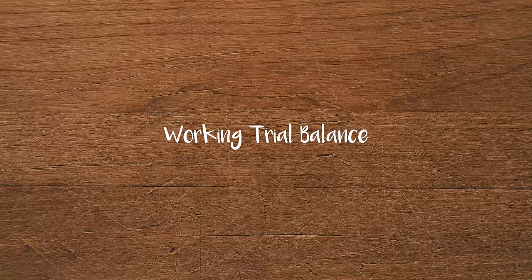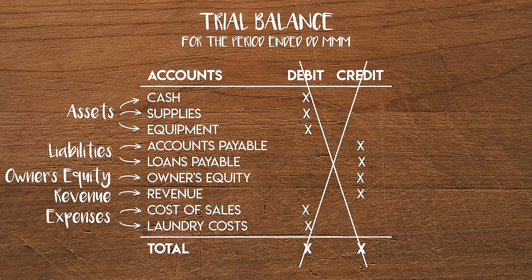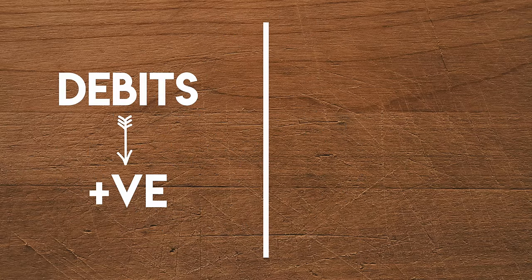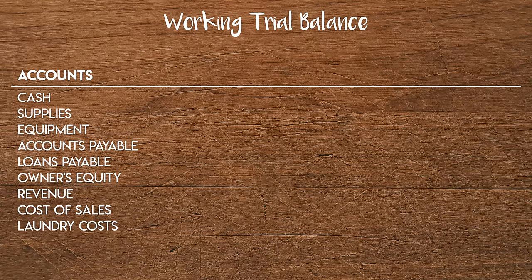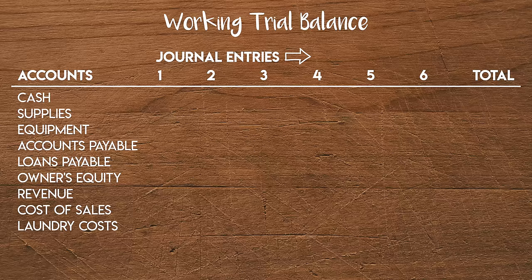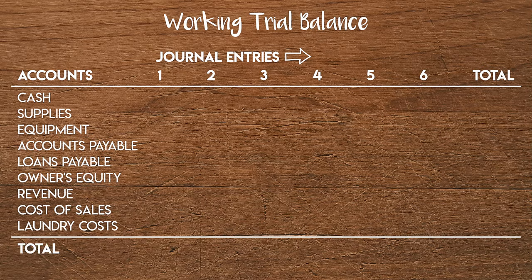Example time. We're going to build the trial balance for our window cleaning business. It's been up and running for one month so we're going to include all of the transactions from the previous two videos. To create this trial balance we're going to use something called a working trial balance. This has a similar format except this time we aren't going to split debits and credits into separate columns — instead we'll identify debits as positive numbers and credits as negative numbers. We need a listing of all accounts, then seven columns to the right: six for each journal entry and a seventh to calculate the total balances. Below the accounts we add one final row for column totals so we can check each journal balances as we enter it.